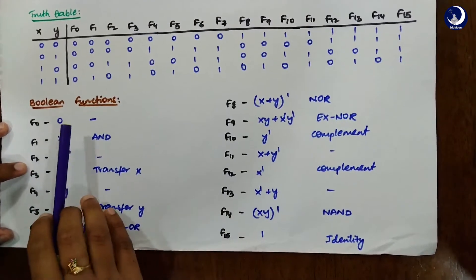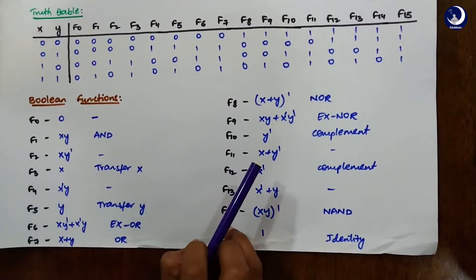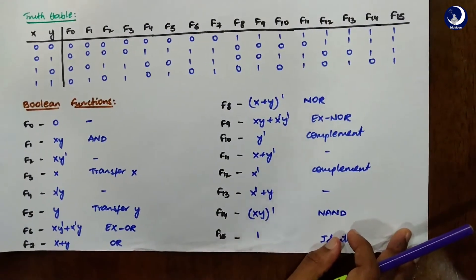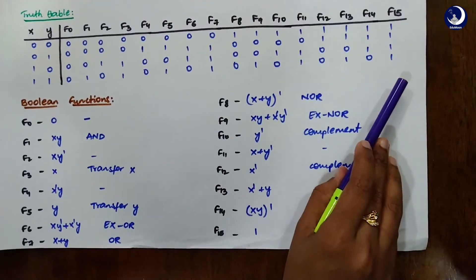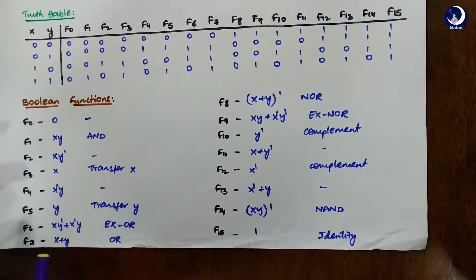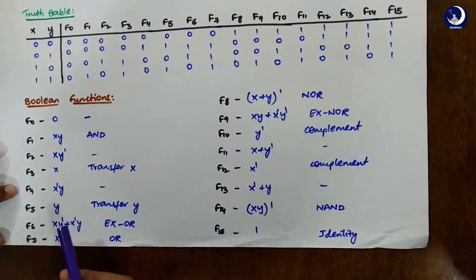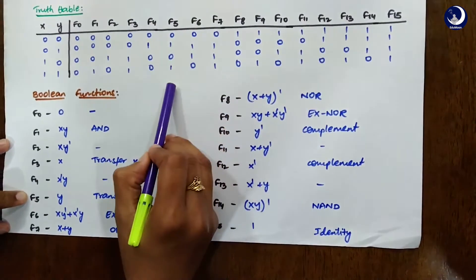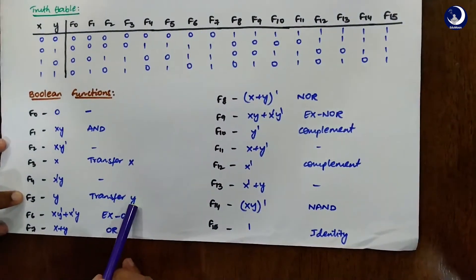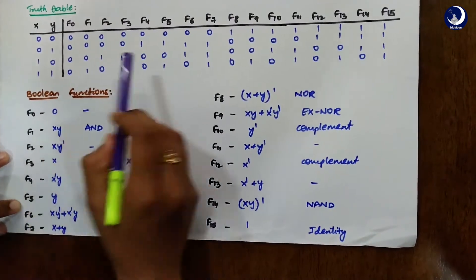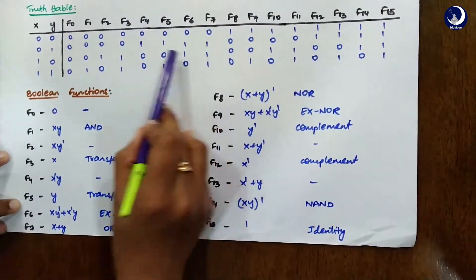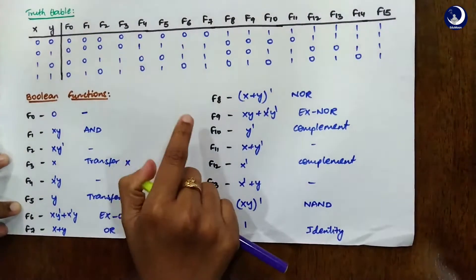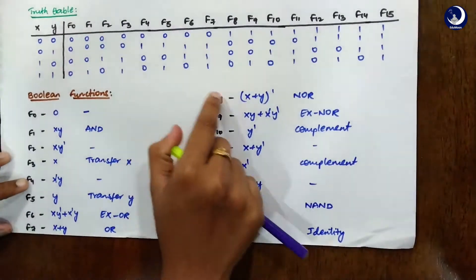This is not the most important topic in this chapter and is not mostly asked, but for your reference I'm showing how to calculate all the other logical operations. For f5, the values are 0,1,0,1 — this is simply a transfer of y. For f6, if you compare the values, you will find it is an XOR operation. You can pause the video and analyze what all the possible boolean functions are.